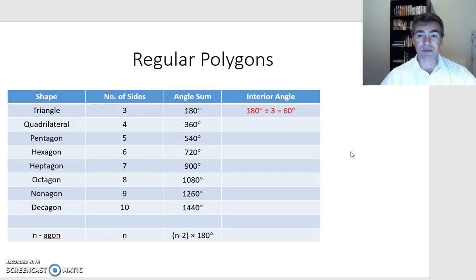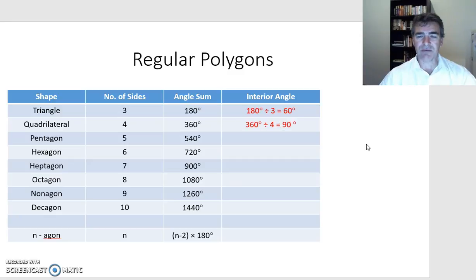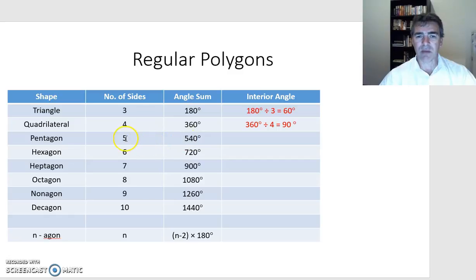For a regular quadrilateral — the square — the four angles are 90 degrees, which is 360 divided by the number of sides. For a pentagon, the angle sum divided by the number of sides or angles gives each interior angle as 108 degrees.